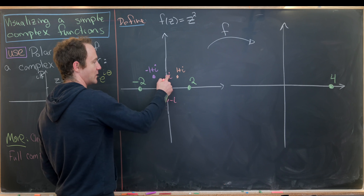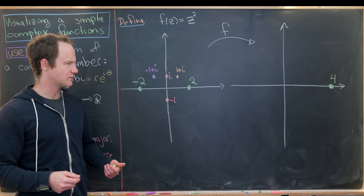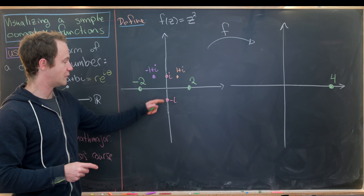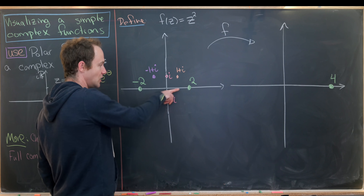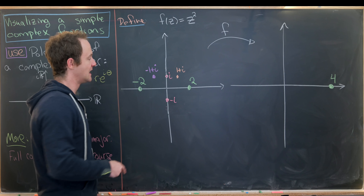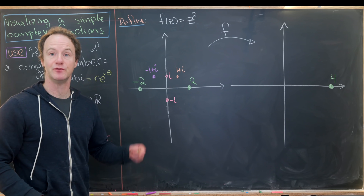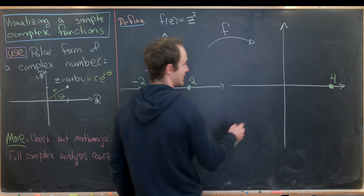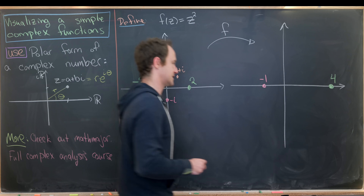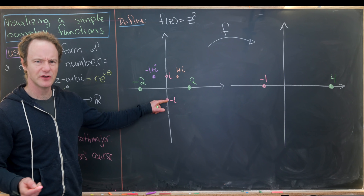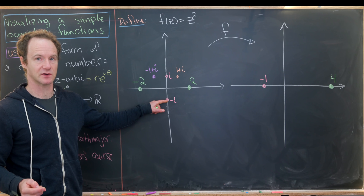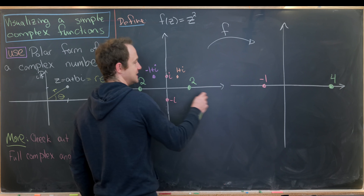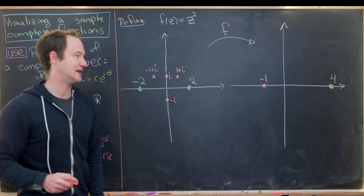Now let's look at i and -i. Naively, squaring i gives -1, and squaring -i also gives -1. The modulus for each is 1. The angle for i is π/2; doubling that gives π. The number with modulus 1 and argument π is -1. For -i, the angle is -π/2; doubling gives -π, which is also back to the negative real axis. So both i and -i map to -1.